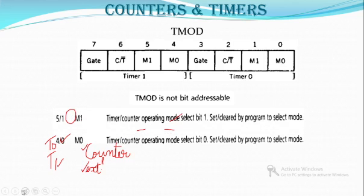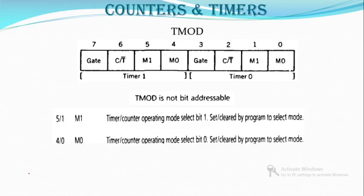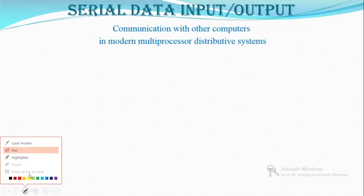The next bits are M1 and M0, which are available in both the lower nibble and the upper nibble. The upper nibble supports timer 1 and the lower nibble supports timer 0. M1 and M0 are the mode select bits — they determine what operating mode this timer or counter will use.